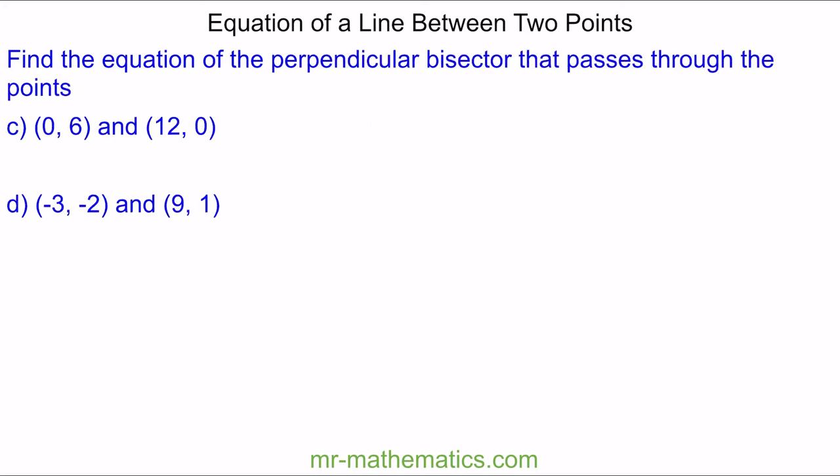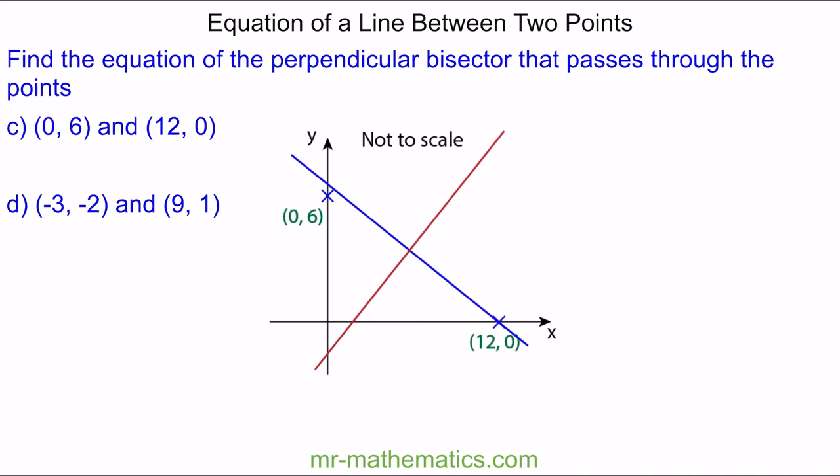Now we're going to work out the equation of a perpendicular bisector. A perpendicular bisector means the line crosses at right angles and halfway between the two points. Because the two lines cross at 90 degrees, the gradient of the red line is the negative reciprocal of the blue line. So if the gradient of the blue line is m, the gradient of the red line will be negative 1 over m.